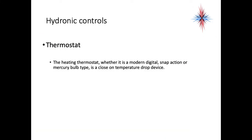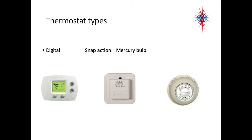The core control of the entire system — what starts it and stops it — is the heating thermostat. It could be digital, snap action, or a mercury bulb. It's a close-on-temperature-drop device, meaning the switch inside closes the circuit as the temperature drops below the set point. You're not seeing many mercury bulbs anymore, so if you pop the top on one, don't be surprised if you see electronics inside.